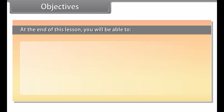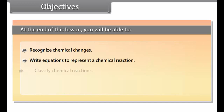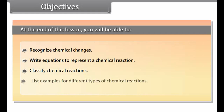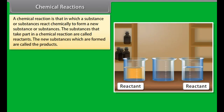Objectives: At the end of this lesson, you'll be able to recognize chemical changes, write equations to represent a chemical reaction, classify chemical reactions, and list examples for different types of chemical reactions.